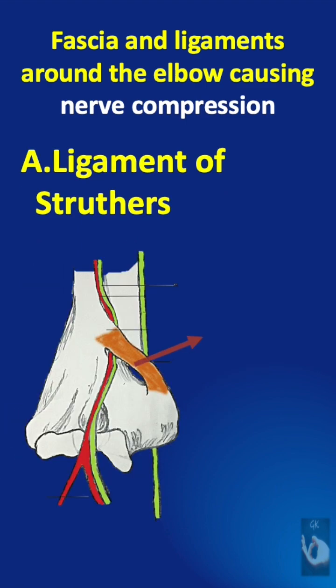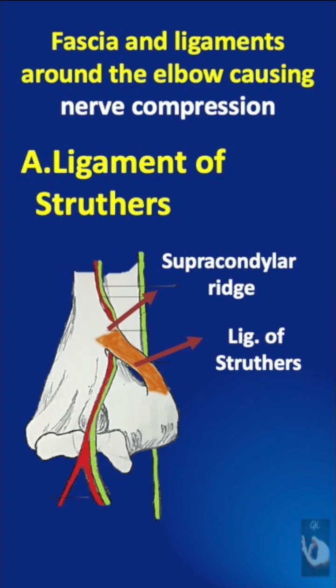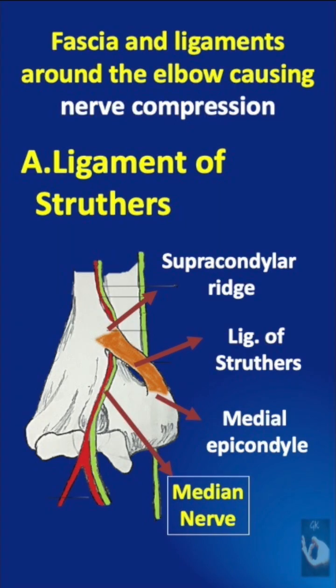The ligament of Struthers extends from the supracondylar process on the anteromedial surface of the distal humerus to the medial epicondyle. When present, it can form a fibrous tunnel that entraps the median nerve that runs underneath it.